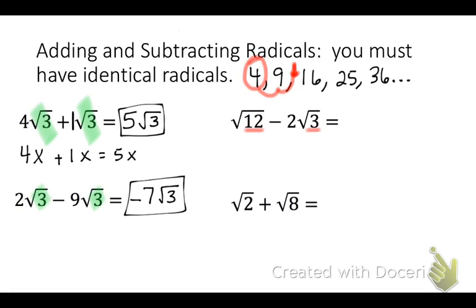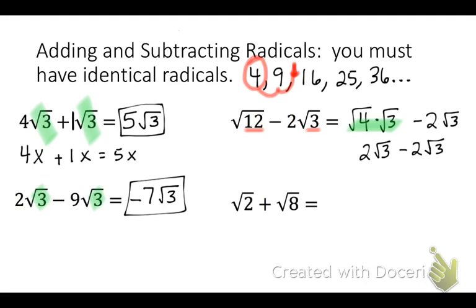So we rewrite square root 12 as the square root of 4 times the square root of 3, because 4 times 3 is 12. Make sure you still bring along the minus 2 square root 3. Now we simplify: the square root of 4 is 2, giving us 2 square root 3 minus 2 square root 3. So 2 minus 2 is 0, and the answer is just 0.